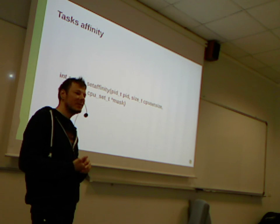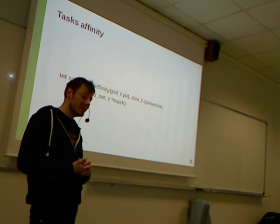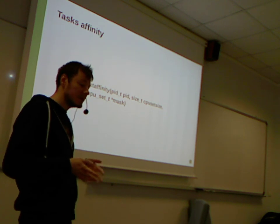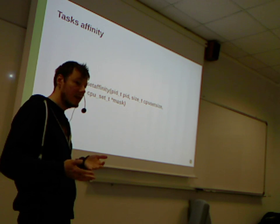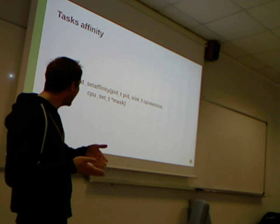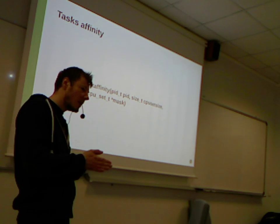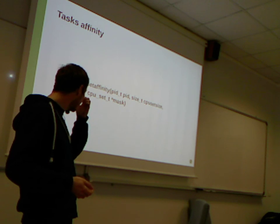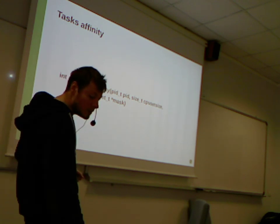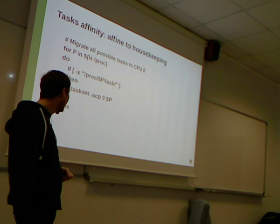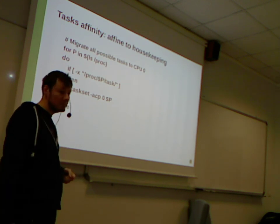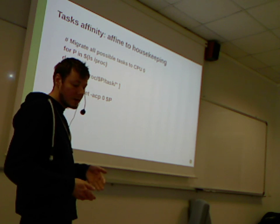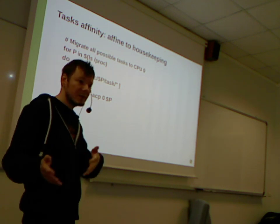The first thing you want to get rid of is tasks — running your user code without being disturbed by other tasks. The basic first step is to isolate all the other tasks and move them to the housekeeping CPU. You do that by setting CPU affinity with the API or using the taskset tool. For example, if you want to run your task on CPU 1, move all other tasks to CPU 0.